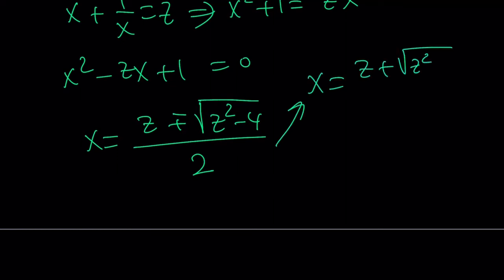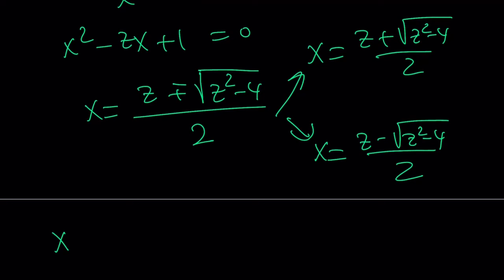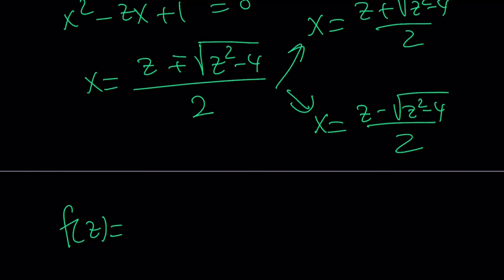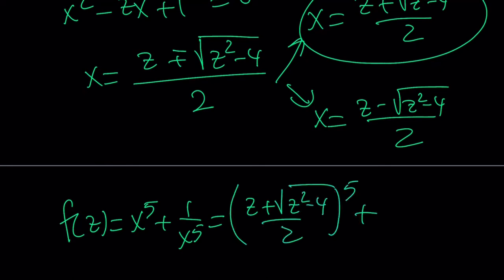This gives two solutions for x, and they're kind of conjugates. It doesn't matter which one we pick, because if x is one of them, the other is 1 over x. So f of z equals x to the 5th plus 1 over x to the 5th, which becomes the sum of z plus square root of z squared minus 4 over 2, to the 5th power, plus z minus square root of z squared minus 4 over 2, to the 5th power.